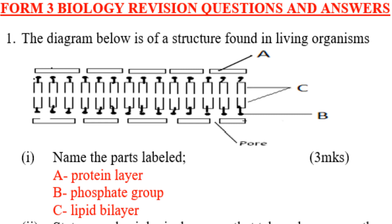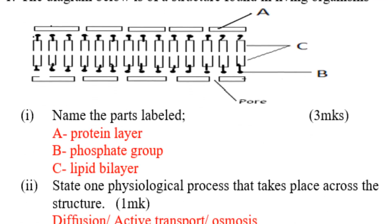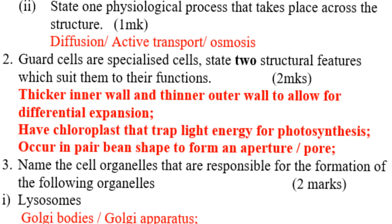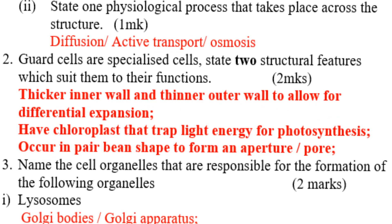Question one: The diagram below shows a structure found in a living organism. You can see it there — one layer, parts labeled a, b, c, and the pores. Name the part labeled: a — that is the protein layer; b — phosphate group; c — lipid bilayer.